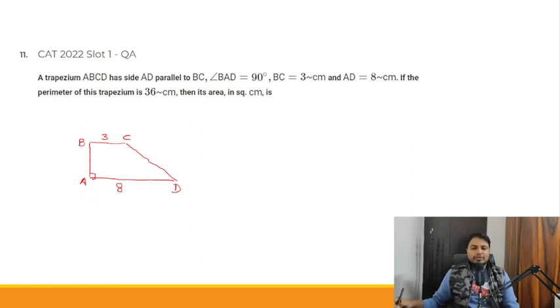So how do we solve this? Let me drop a perpendicular from C to AD at point E. If AB has length X, then CE also equals X. Since BC equals 3, AE equals 3. Since AD equals 8, then ED equals 5.